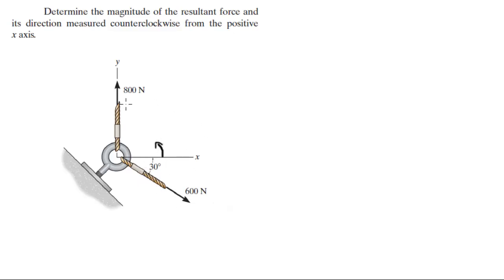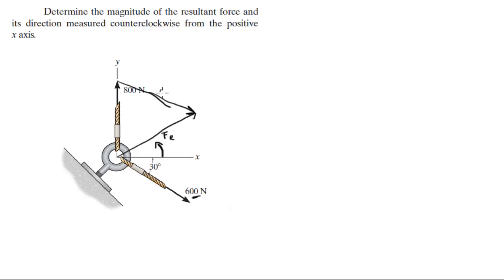Basically what you gotta do is form a triangle between these two vectors and the resultant force. To do so, pick up one of the vectors and connect it to the end of the other. I moved this 600N vector over here, and now that will be the resultant force FR. This is 600 and this is 800. This is the angle we're looking for — let's call it theta.